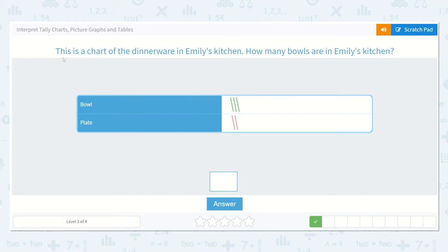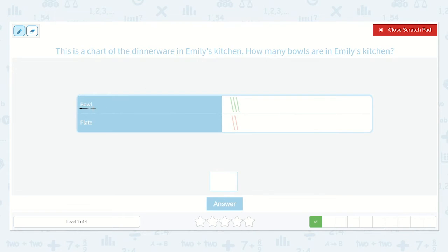Now this one says, this is a chart of the dinnerware in Emily's kitchen. How many bowls are in Emily's kitchen? Do you see the word bowls here? It's okay if you don't know how to spell the whole word, but I know that it starts with the B sound, which is the letter B. And I found it here.